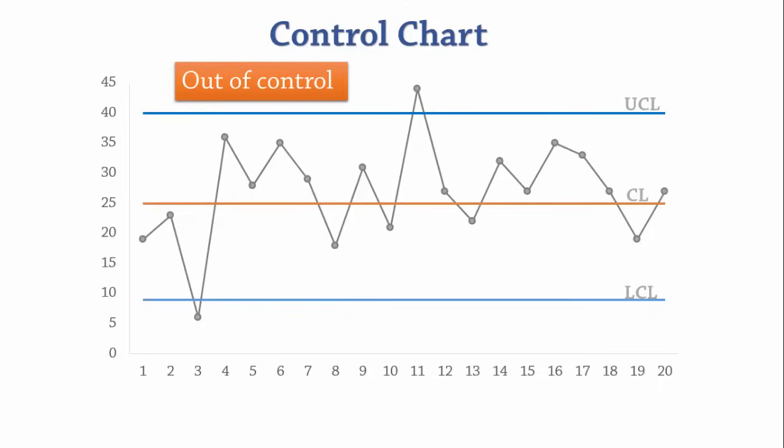Here is a control chart that shows the process is out of control because there is a point above the upper control limit. There is also one below the lower control limit. Either of these show us that the process is not in control.